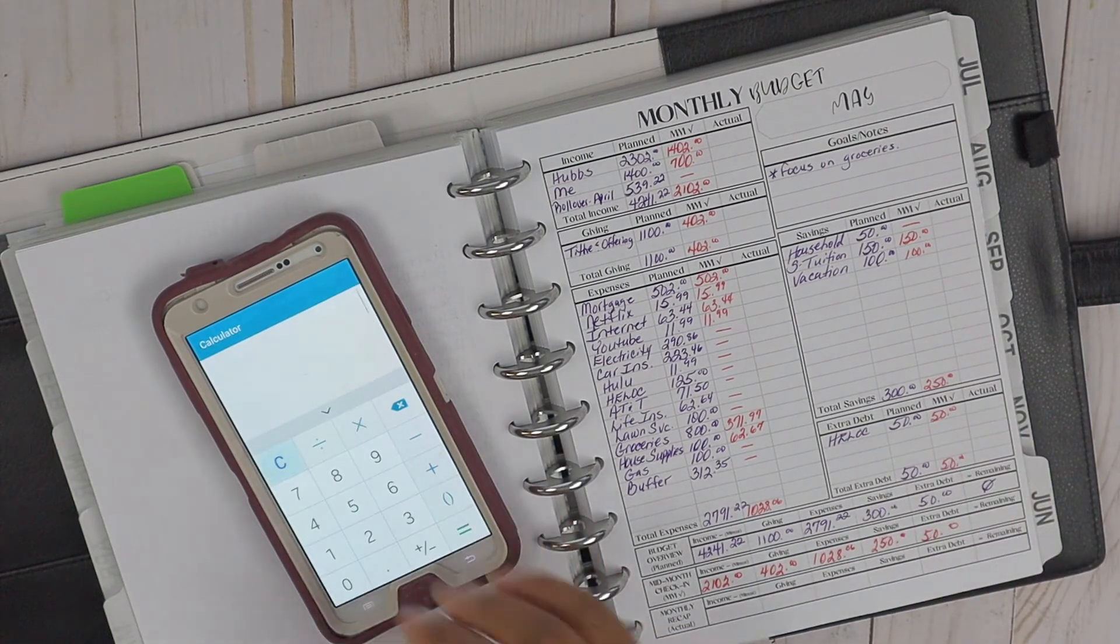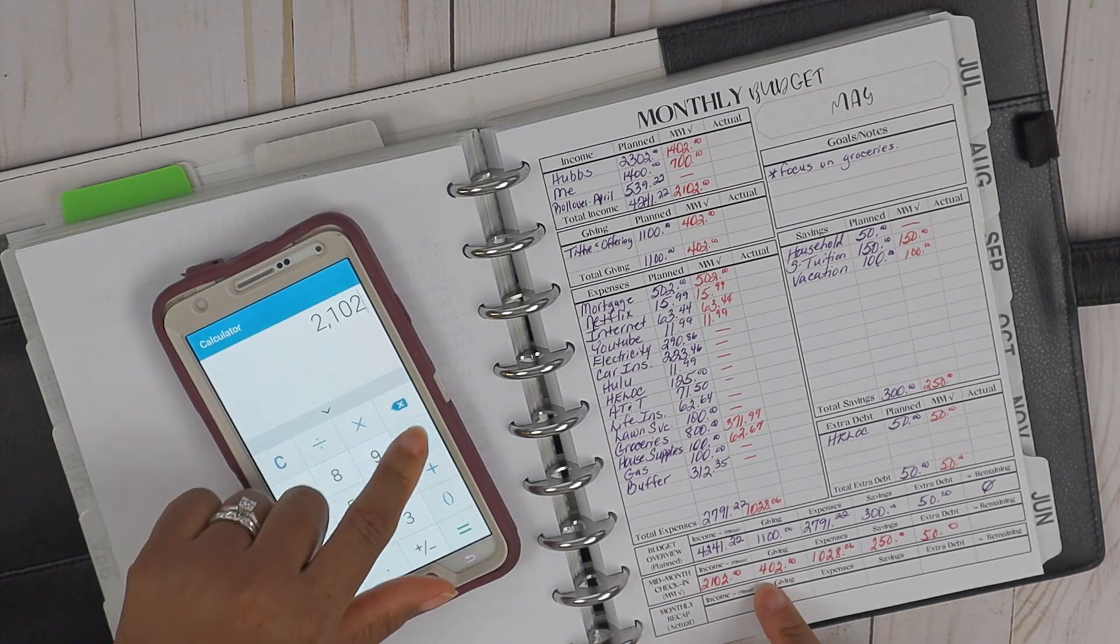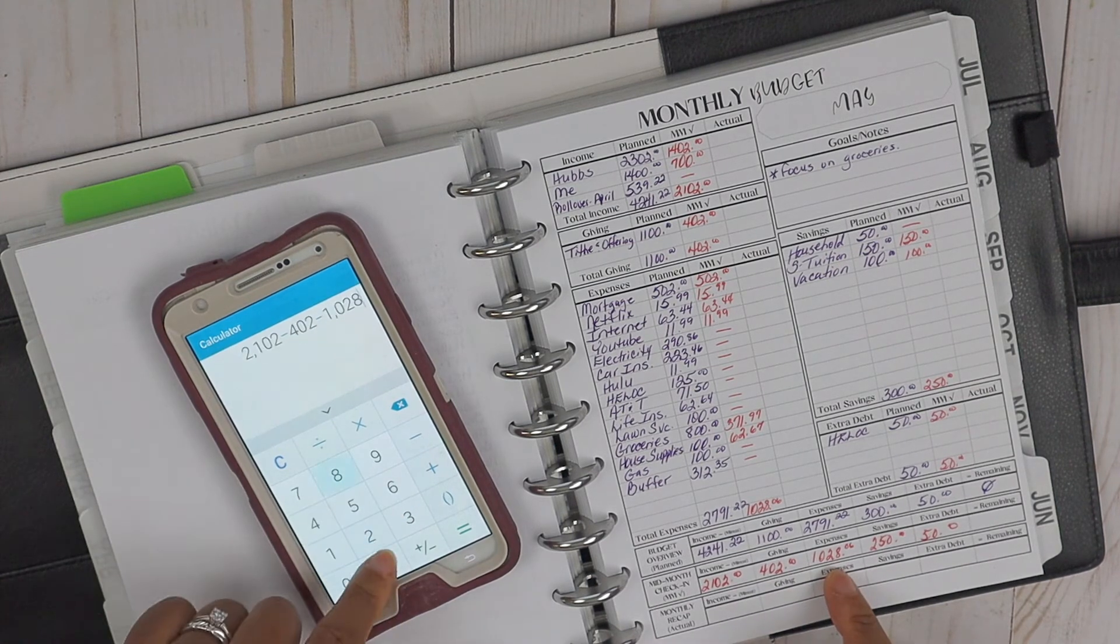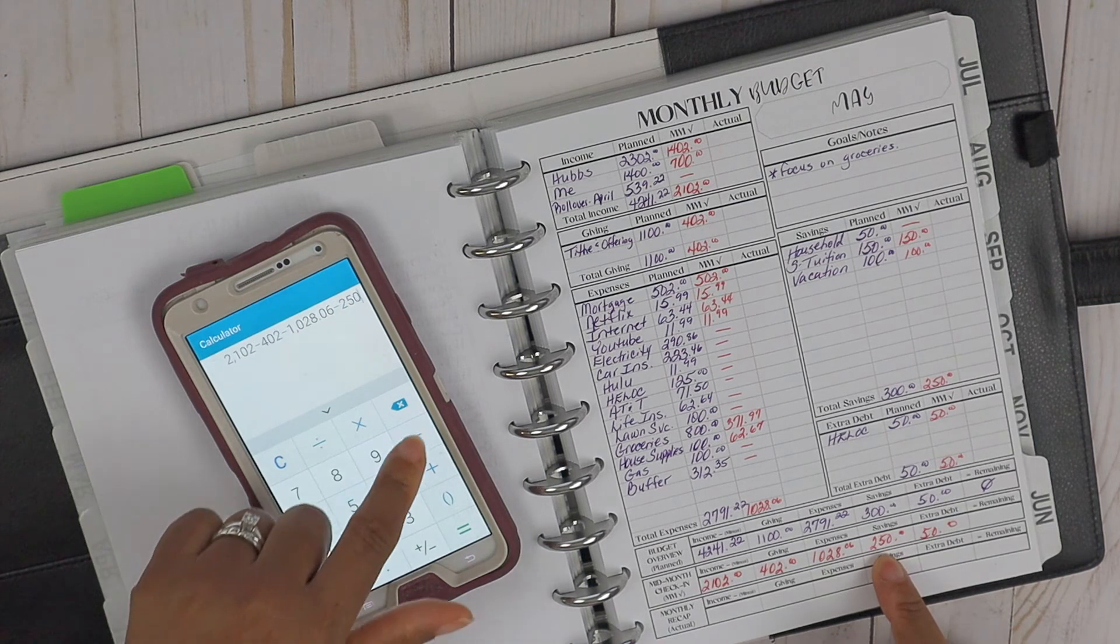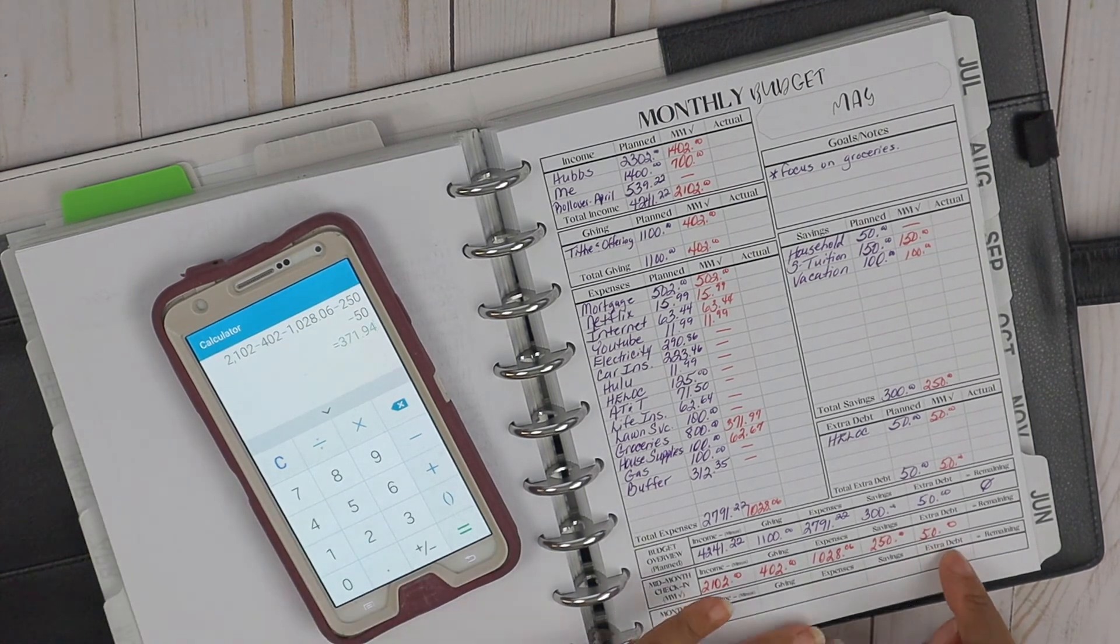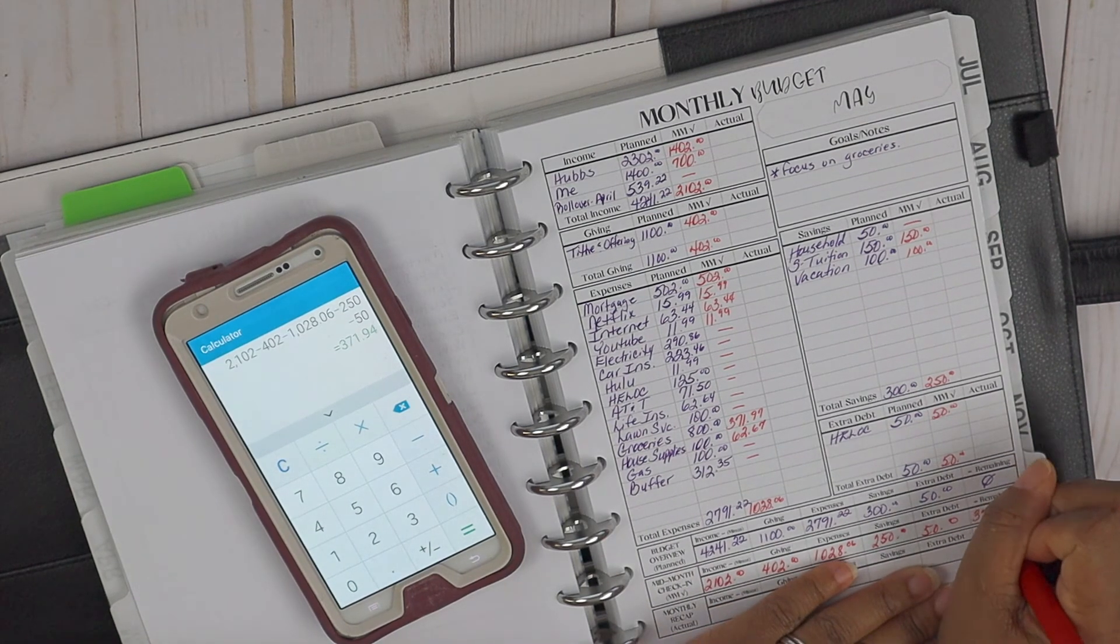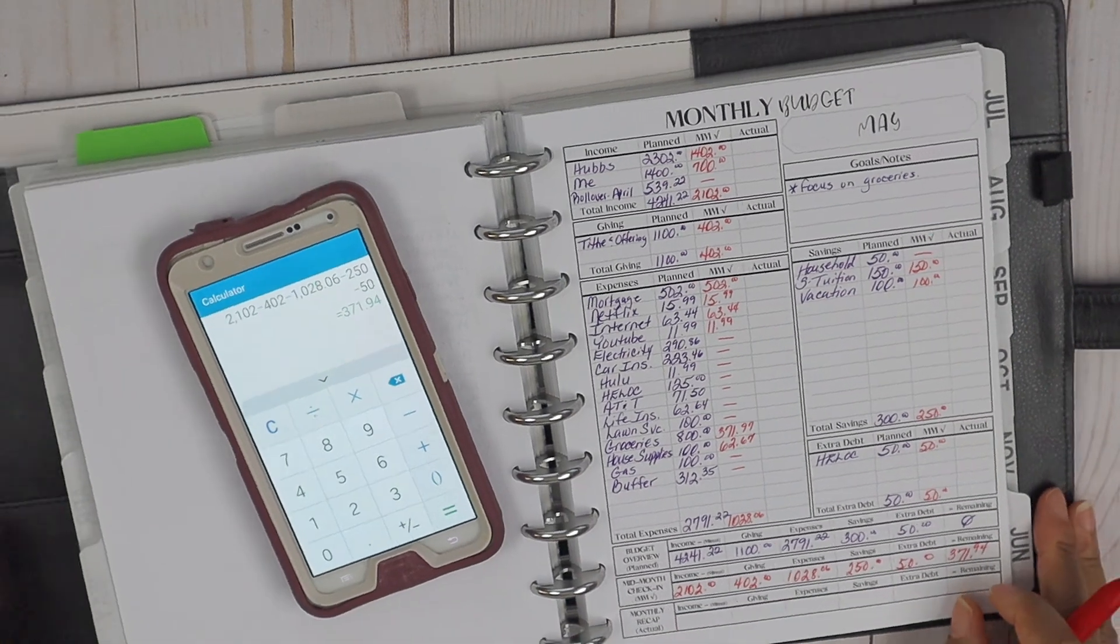So let's crunch these numbers here. $2,102, and it says minus $402, minus $1,028.06, minus $250, minus $50. So we have remaining thus far at mid-month $371.94, which is awesome.